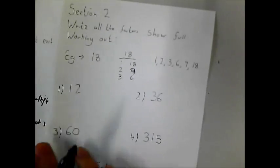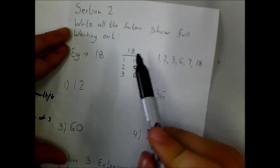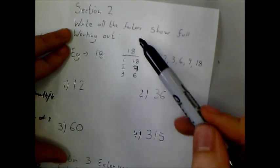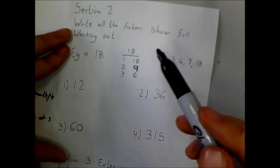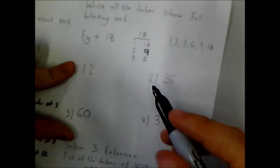Let's move on to section 2. We're being asked to find all of the factors using a full method. We're going to use our factor pairs to help us.